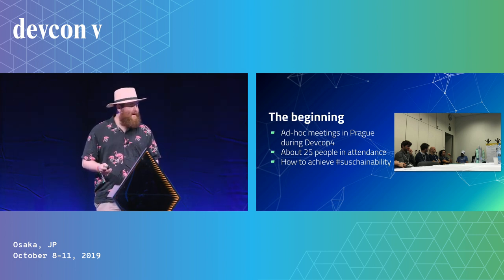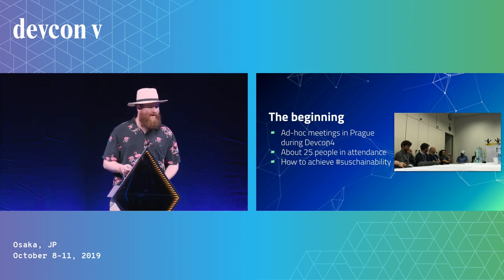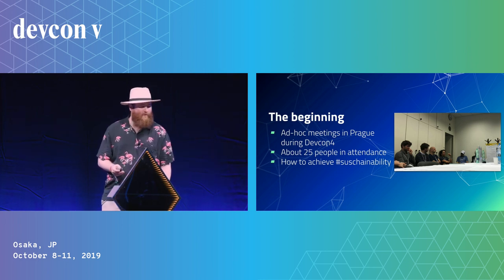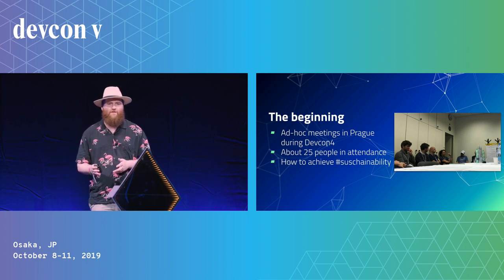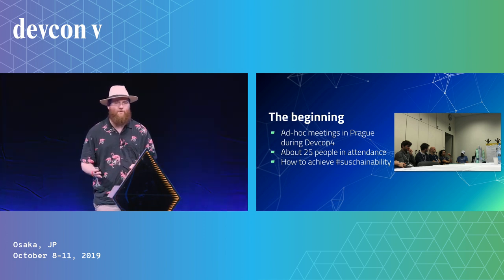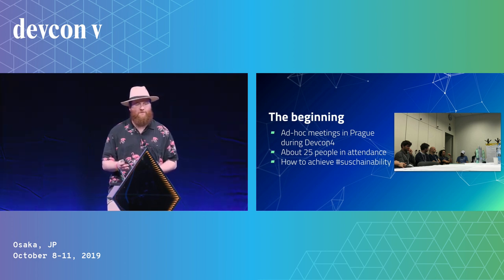Here's the beginning. We had ad hoc meetings in Prague during DevCon 4 — there were about 25 people there. We talked about how to achieve sustainability. There's a lot of state bloat, and there are things going on that are going to fundamentally change Ethereum when 2.0 comes around. How can we best prepare for those in 1.0 while keeping the network very efficient and optimizable for people to use?